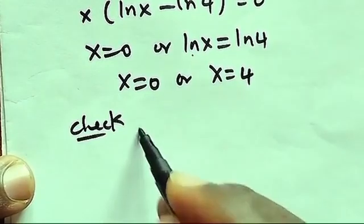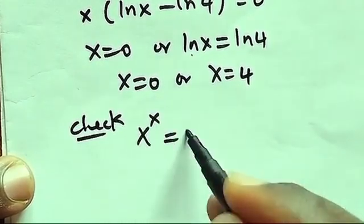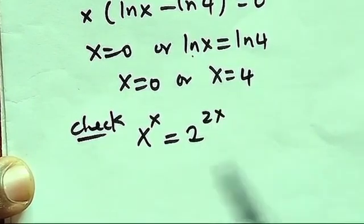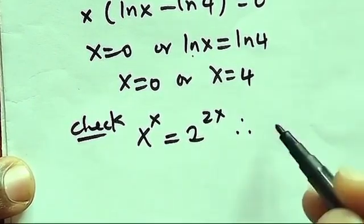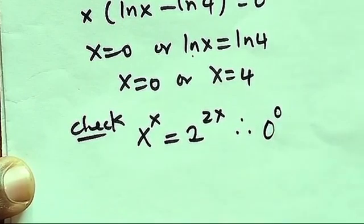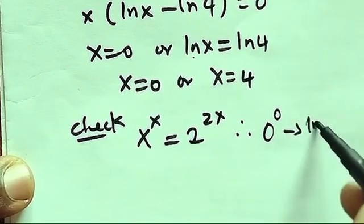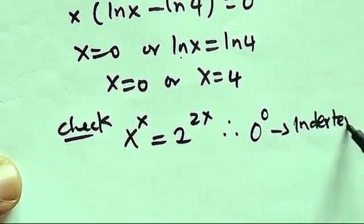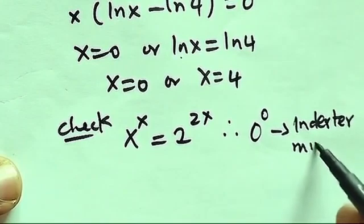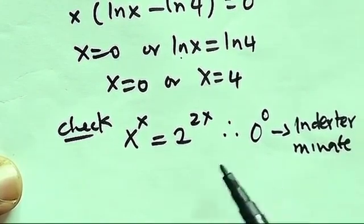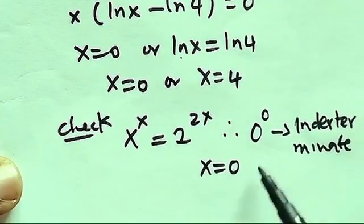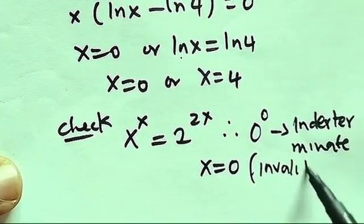We can see that from what we have there, we have our equation to be x to power x equals 2 to power 2x. So if we try to put x equals to 0, x raised to the power 0, you can see that x raised to the power 0, this one will give us indeterminate. So therefore we said x equals to 0, this one is invalid.